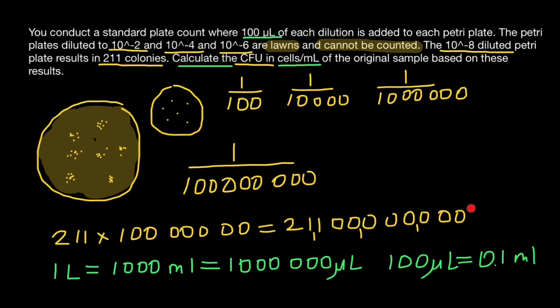What we have found earlier is that this number of bacteria we can find in 100 microliters, which is 0.1 milliliter. In order to find how many we can find in a milliliter, we have to multiply our answer by 10, or we just can add a zero here.